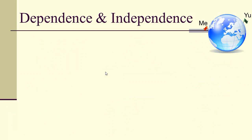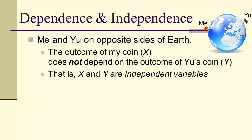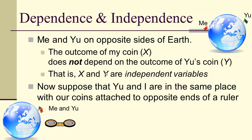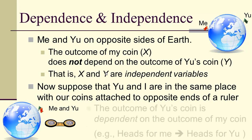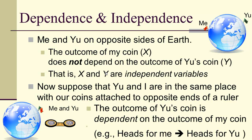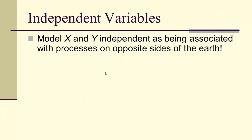Me and you are on opposite sides of the earth, so the outcome of my coin does not depend on the outcome of your coin — we say x and y are independent variables. But if you and I were at the same place and taped our coins to opposite ends of a ruler, the outcome of your coin would depend on mine — heads for me would imply heads for you. When we want x and y to be independent, we can imagine them as processes taking place on opposite sides of the earth.